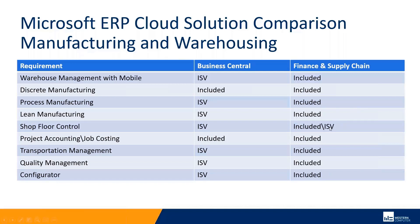There is some shop floor control included with Finance and Supply Chain, but many companies still choose a separate ISV because it's often industry-specific or they have a certain workflow they're looking for. Project accounting and job costing is included in both. Transportation management is an ISV with Business Central, but included in Finance and Supply Chain. Quality management is the same. When you start stacking up needing four, five, or six of these things, it might be worth looking at Finance and Supply Chain. A configurator is also included there, but people often choose a separate best-of-breed option since the Microsoft Dynamics configurator isn't as easy to use as some third-party options.